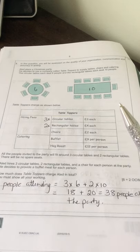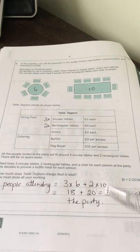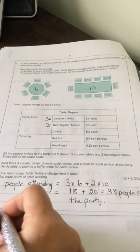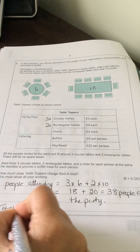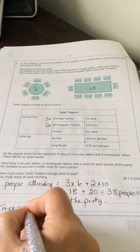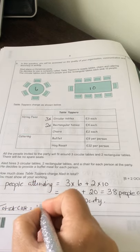So if we think about how we are going to work out the costs, it means for the total cost, we need to work out the hire of the tables